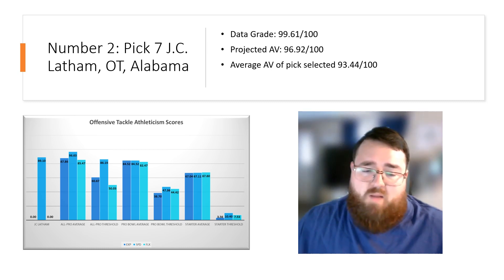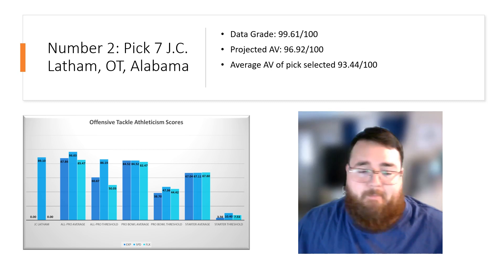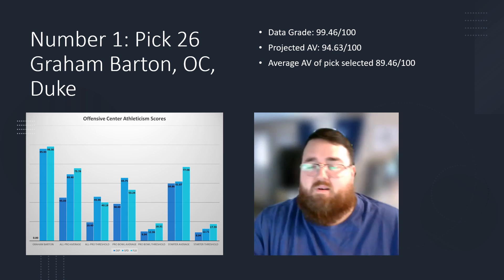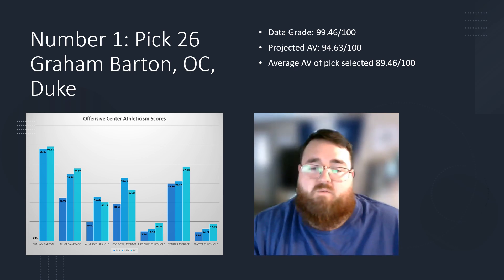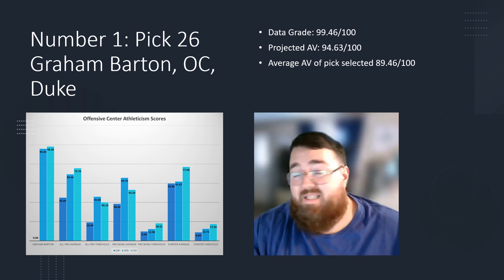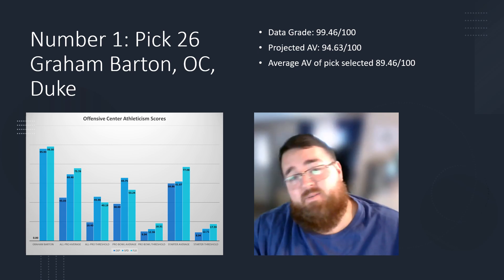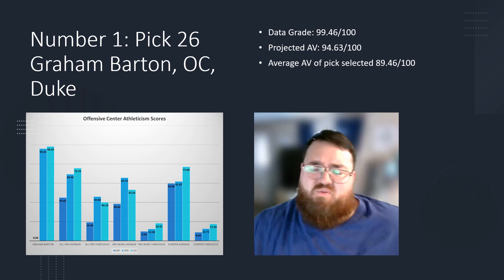The number one most impressive prospect selected based on data in the 2024 NFL draft class: Graham Barton, center from Duke. Data grade 99.46 out of 100, projected AV 94.63 out of 100, and his average AV of where he was selected — the DAV — was 89.46 out of 100. He was picked at pick 26. Very impressive.